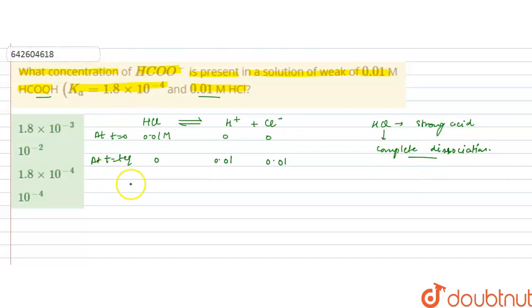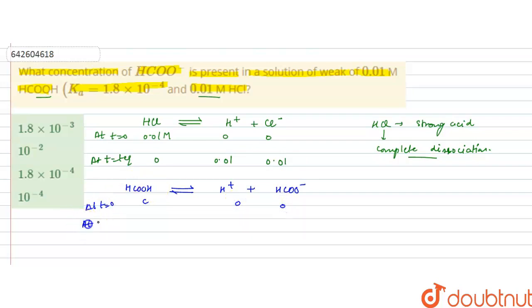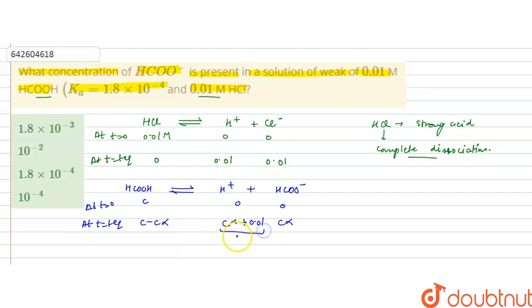Now HCOOH, the weak acid, will also dissociate into H⁺ and HCOO⁻ ions. At time T=0 let its concentration be C, and at equilibrium if it is reduced by alpha amount then C·alpha concentration will be consumed, forming C·alpha of each product. But H⁺ ions are already present due to HCl, so the total H⁺ concentration will be C·alpha plus 0.01.